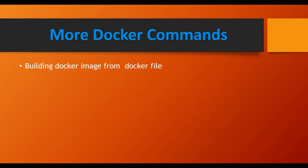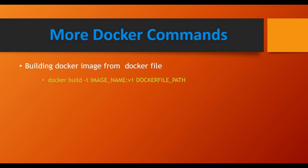To build a Docker image from a Dockerfile, use docker build -t <image_name>:<version> <dockerfile_path>. If you run this command from the same folder as your Dockerfile, use a dot as the path: docker build -t image_name . If the Dockerfile is in a different folder, provide the full path.